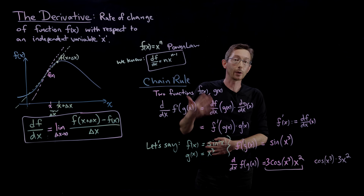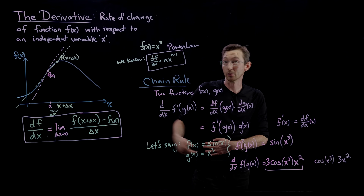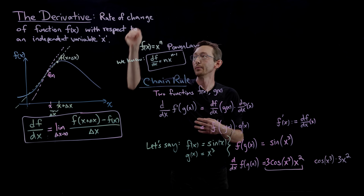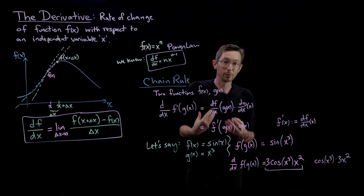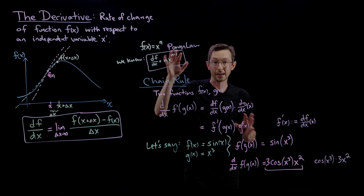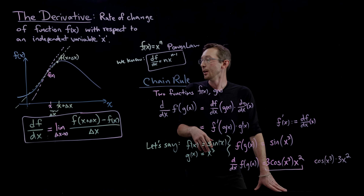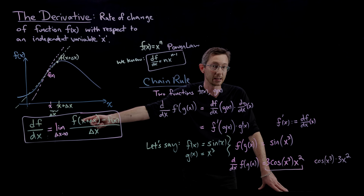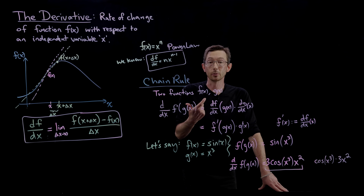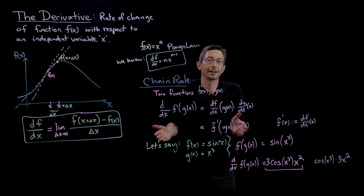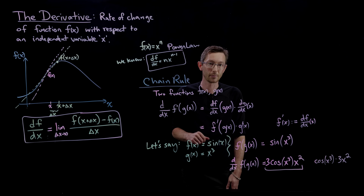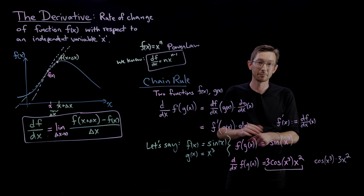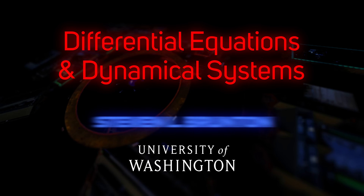So that's a quick review of the derivative — the rate of change of a function with respect to its independent variable. You can have the geometric picture, the words, or the math, and use those first-principle ideas to get powerful rules for taking derivatives of almost any function. In the future we'll be approximating these things numerically — not taking the limit as delta x goes to zero — and there will be some error, but that's how we do it on a computer. Thanks for listening, and hopefully this will help you build up into things like differential equations.